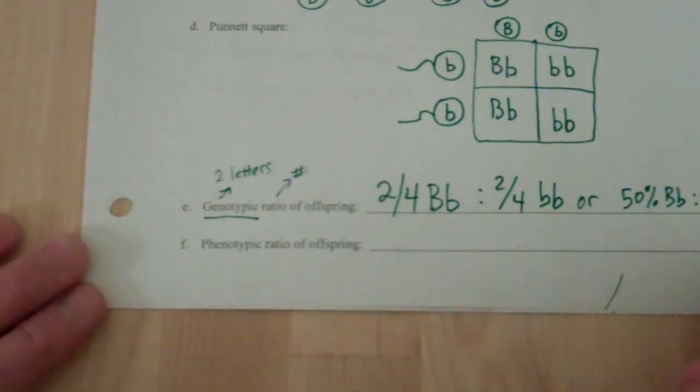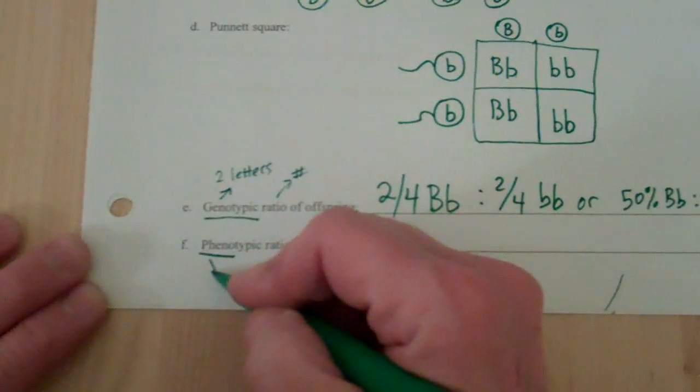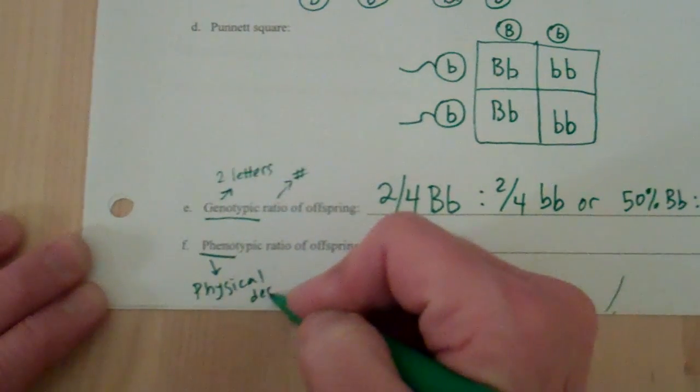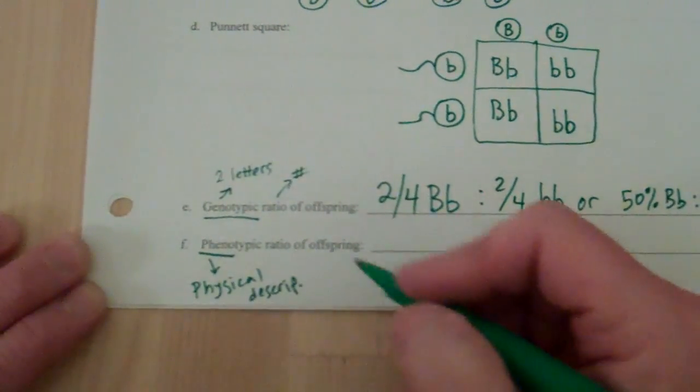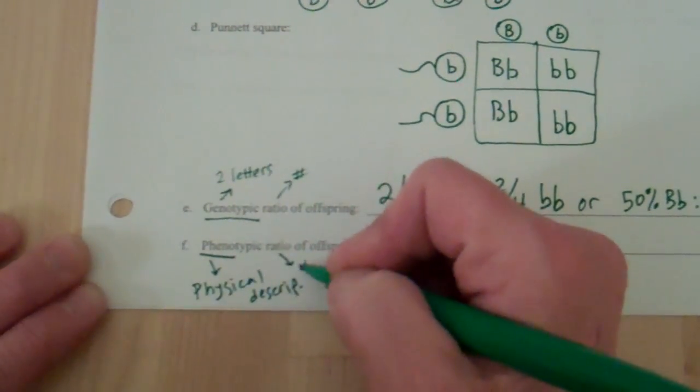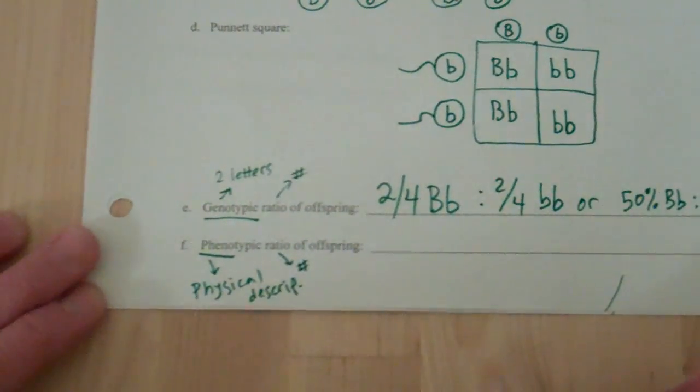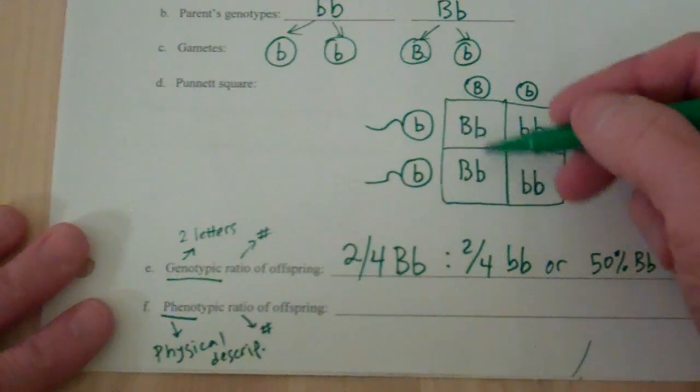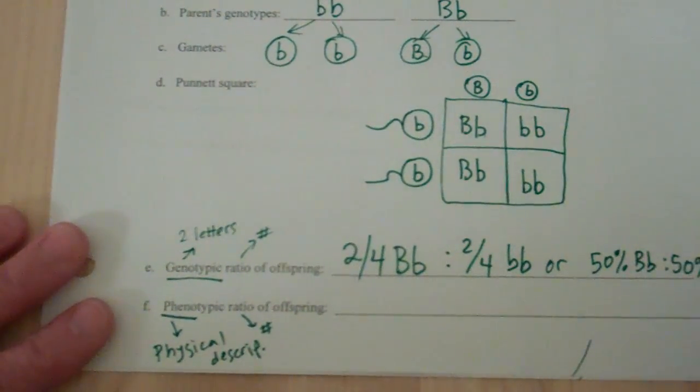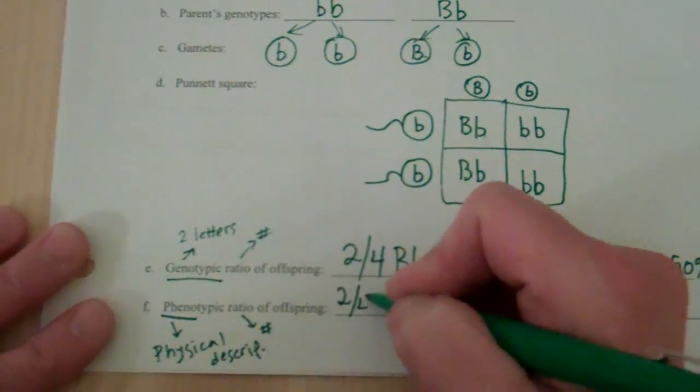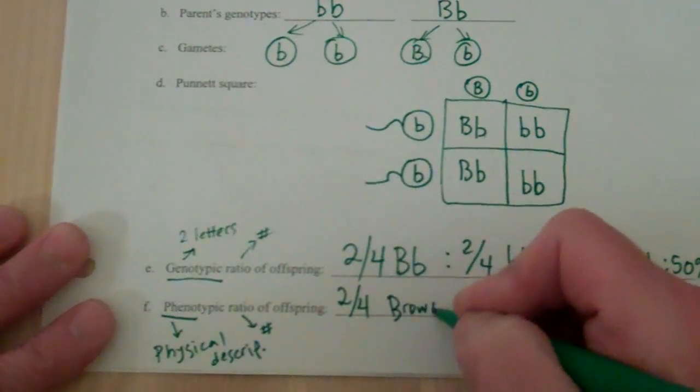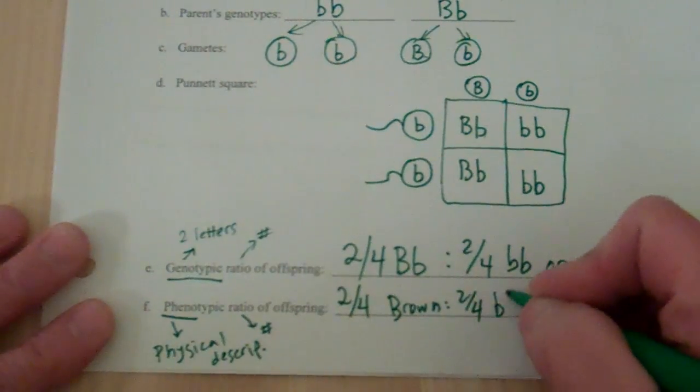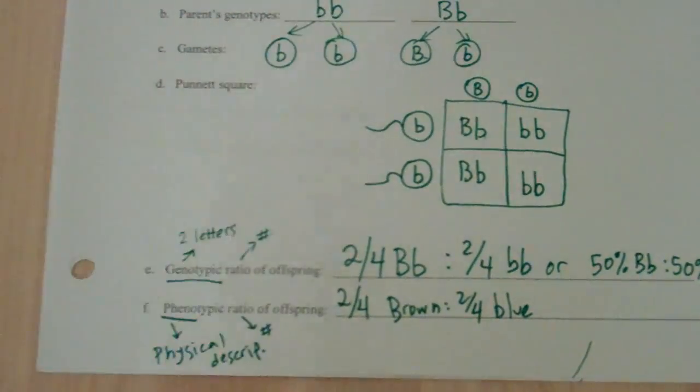Phenotypic ratio. Phenotypic, phenotype means a physical description. And again, ratio means I need some numbers. So looking at your Punnett square, what are the phenotypes of your offspring? Two of them have brown eyes. Two of them have blue eyes. So again, two out of four have brown eyes, to two out of four of our offspring are predicted to have blue eyes. Again, you could do percentages.